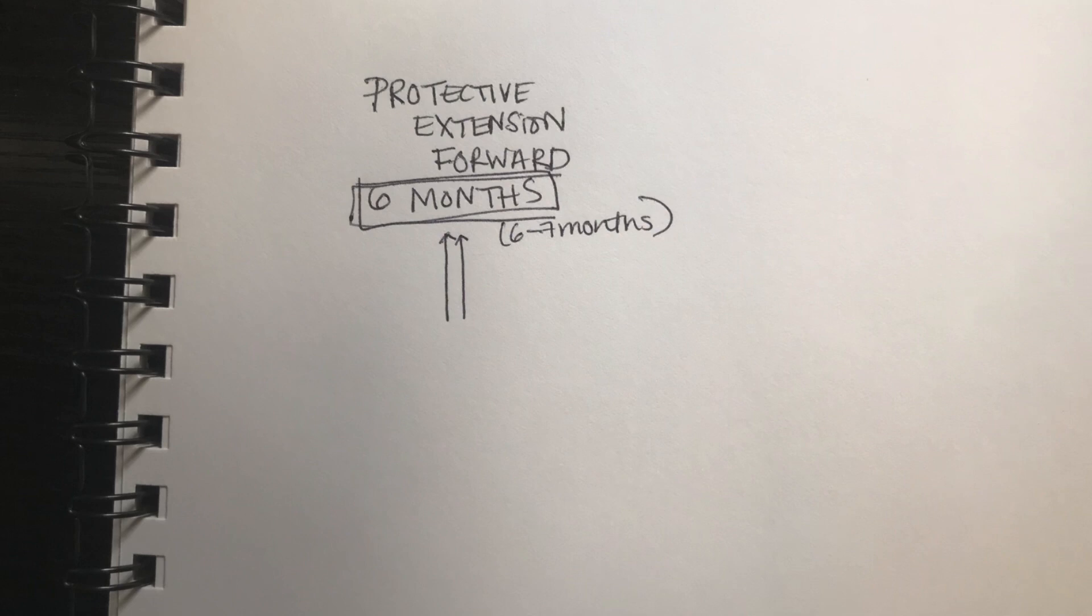So when actually testing this reflex, you grab the baby and you suddenly tip them forward towards a supporting surface. What should happen is the baby should have an extension of the upper extremities with their hands open and a neck extension. So if we're thinking of this like a clock, you see the arms are forward.